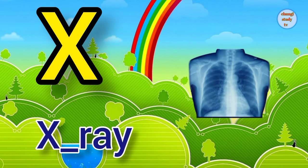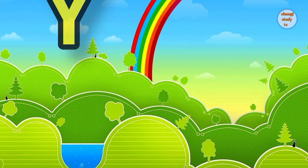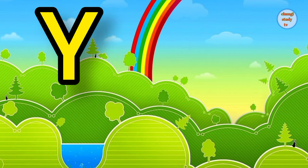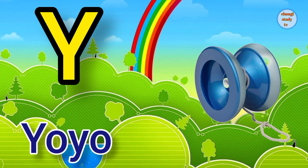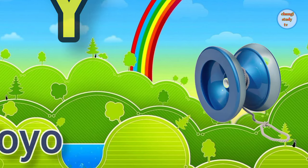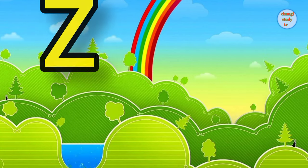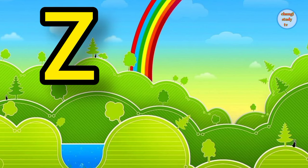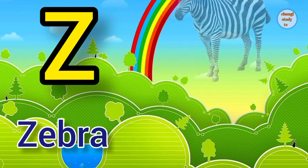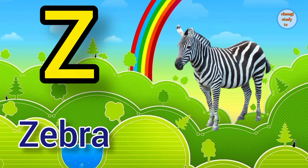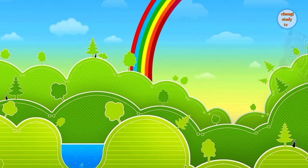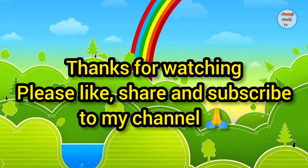X. X for x-ray, x-ray means x-ray. Y. Y for yoyo, yoyo means yoyo. Z. Z for zebra, zebra means chithidhar ghoda.